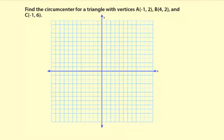Find the circumcenter for a triangle with vertices A(-1, 2), B(4, 2), and C(-1, 6).